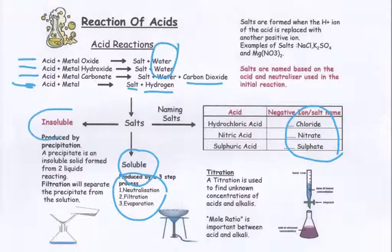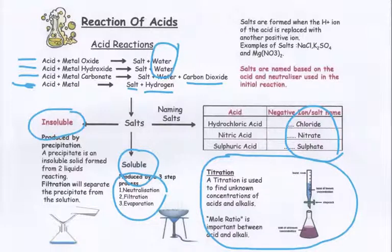Or an insoluble salt will be formed. This is collected by precipitation, whereby the salt itself comes out into the water and it is filtered. Titrations are methods of discovering the concentration or volume used of one of the reactants because in a neutralisation reaction the mole ratio between each acid and the alkali have to be the same.